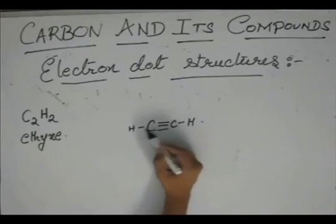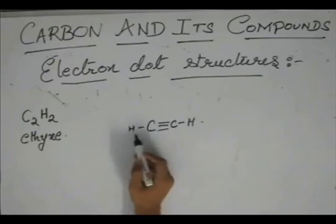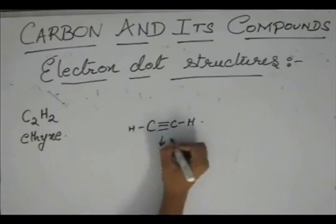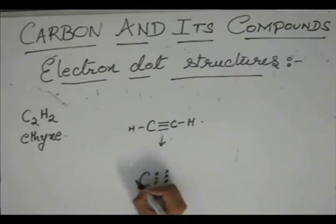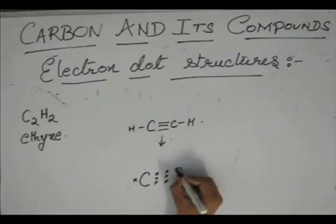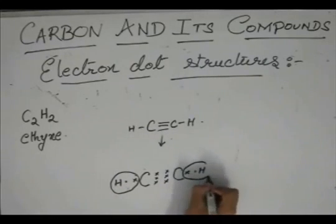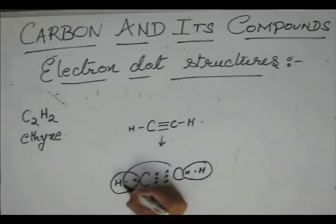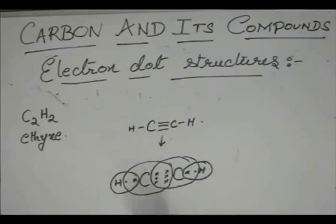So, this carbon has 1, 2, 3, and 1 — four bonds — so its valency of 4 is satisfied. And of course, hydrogen's valency of 1 is satisfied. The electron dot structure will be: hydrogen with a dot, hydrogen with a dot. Satisfy the hydrogen first, and then satisfy these two carbons. Carbon has 6 plus 2 equals 8, and hydrogen has 2 as usual. So, this is the electron dot structure for ethyne.